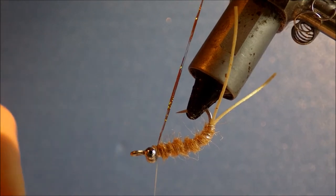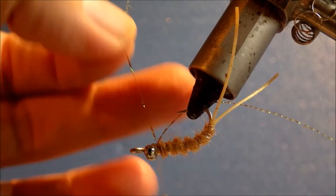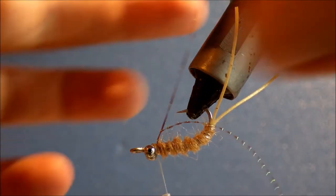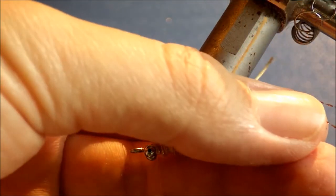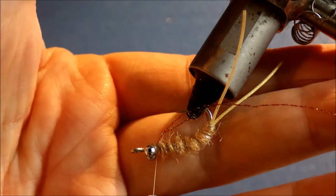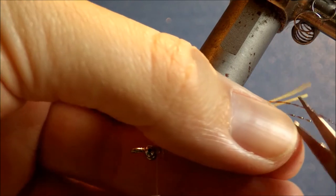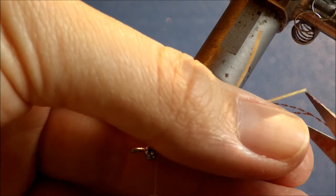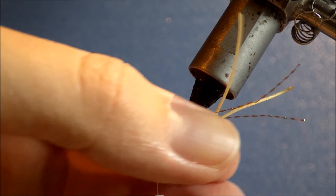So fold the crystal flash over your thread and then tie it down so it's sweeping back, a strand in either side of the body. And I like to cut them just about level, maybe slightly shorter than the set of legs at the back.